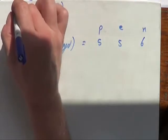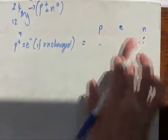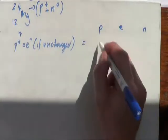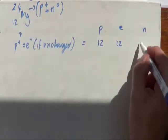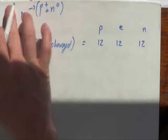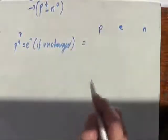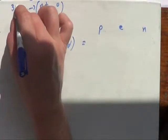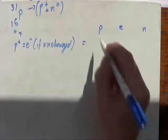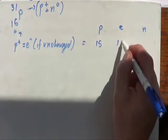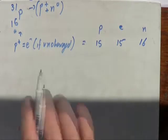Let's change it to magnesium: protons are 12, electrons are 12, and neutrons are 24 minus 12 which is obviously 12. Let's do phosphorus: 31 and 15. Protons are 15, electrons are 15, and neutrons are 31 minus 15 which is 16.